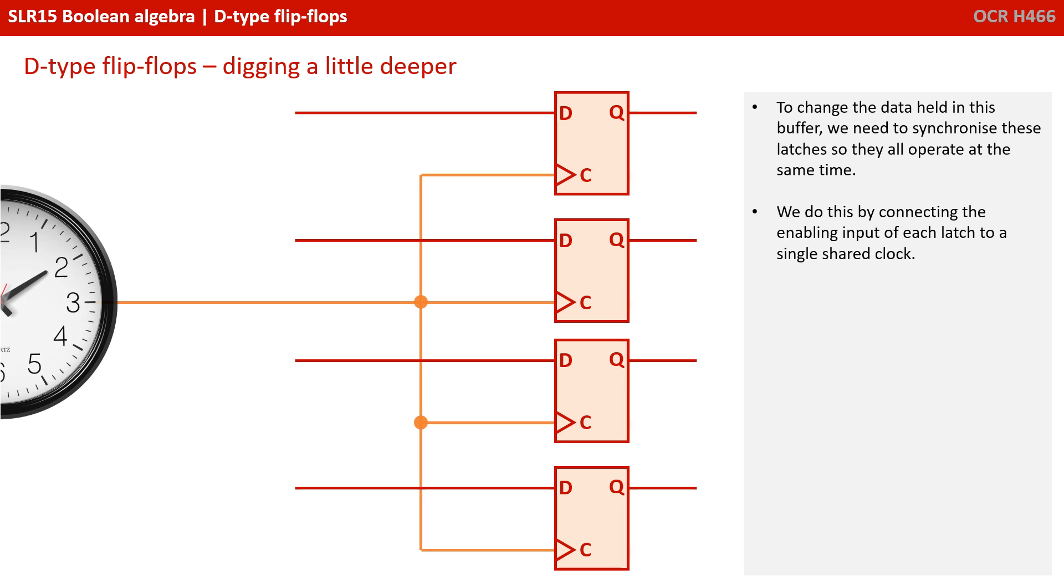To change the data held in this buffer, we need to synchronize these latches so they all operate at the same time. We do this by connecting the enabling input of each latch to a single shared clock.